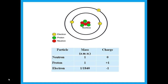With respect to mass, protons and neutrons are equal; electrons are very very small in mass. Regarding charges: a neutron is neutral — it has a charge of 0. Protons have a charge of plus one, and electrons have a charge of minus one. So protons are positively charged and electrons are negatively charged.